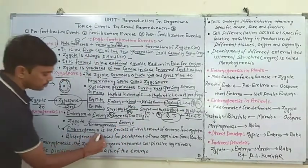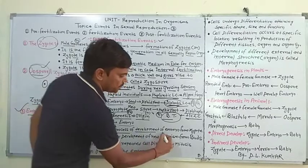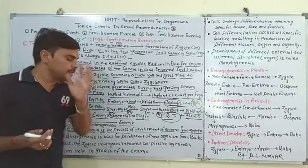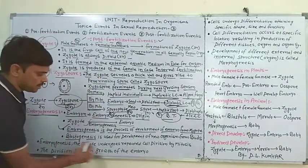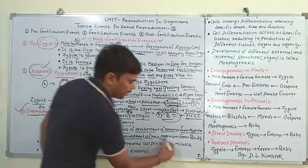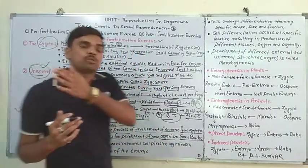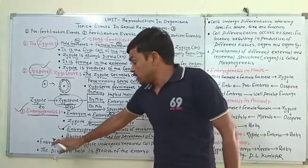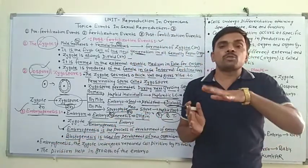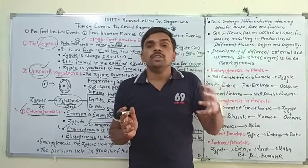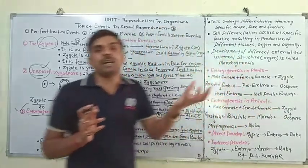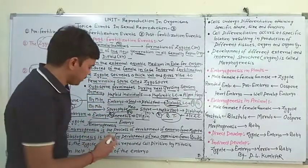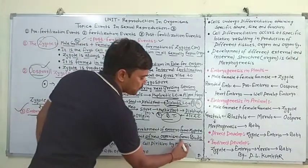Embryogenesis is the process of development of embryo from zygote. Zygote से embryo का development होना Embryogenesis कहलाता है। Blastogenesis is used for development of new organism from bud — asexual reproduction में Embryogenesis जैसी events नहीं होती, वहाँ Blastogenesis होती है। Bud से new organism का development होना Blastogenesis कहलाता है।